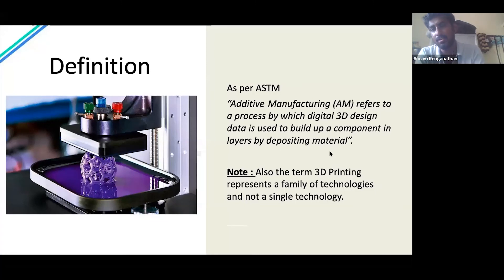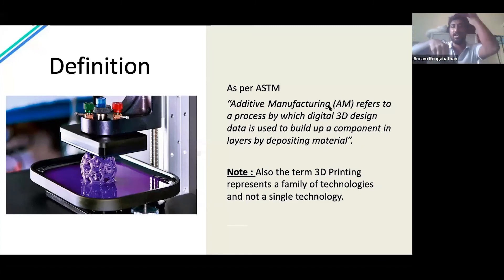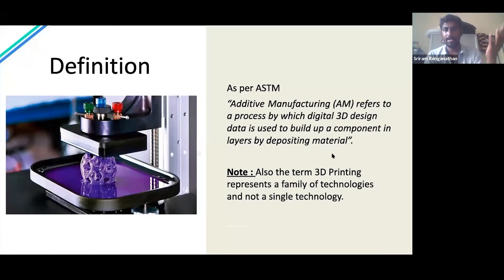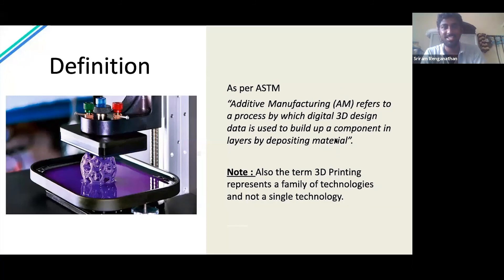A naive but useful analogy: think of jalebi making. When making jalebi, you extrude material in a pattern layer by layer to form the final shape — that is essentially what 3D printing does. You give the material, you give the data, and the machine produces the actual physical object. So for your first session, you can tell your friends that 3D printing is nothing but a jalebi-making machine — it will make it very simple to understand.